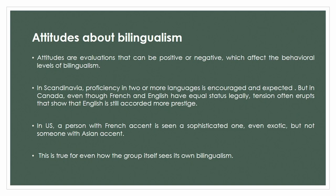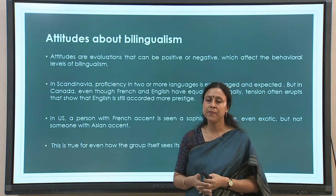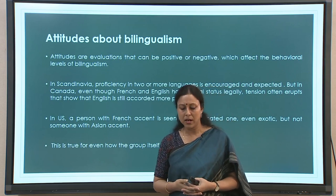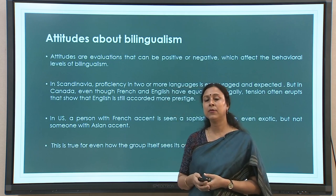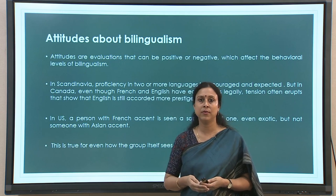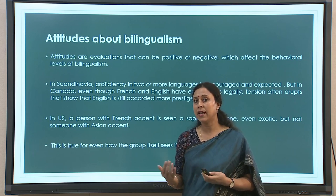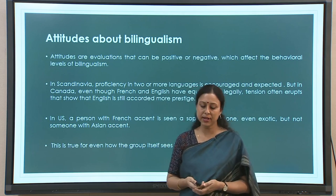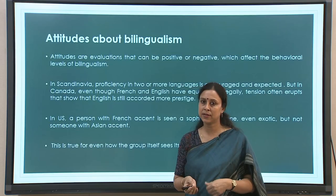Which society has been historically monolingual and how will it react if bilingualism becomes imminent? This is opposed to a society that has been multilingual for centuries — their attitude will certainly be different. One example is the USA versus many Scandinavian countries. Attitudes are basically positive or negative evaluations of linguistic behavior. In the US, for example, bilingualism was not considered a very socially valuable asset, primarily because of the population with whom bilingualism was associated.